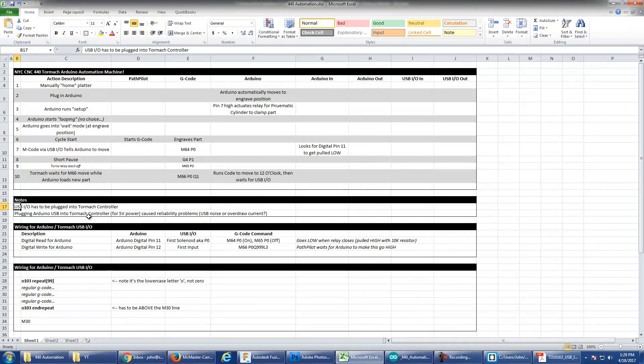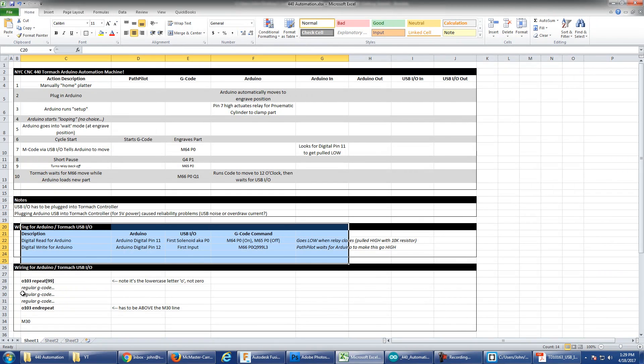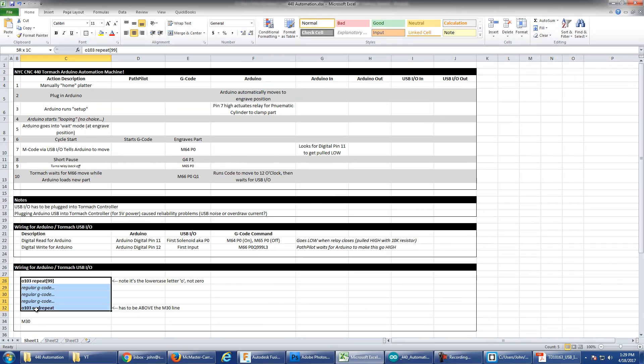A couple other notes. Obviously the USB IO device has to be plugged into your PathPilot USB. I had problems when I was plugging the Arduino into the same computer that was just to provide Arduino power. So I ended up plugging the Arduino into a 12 volt iPhone USB power adapter. I suspect that could have been some current or electrical noise problems there. I've got some additional information on how the Arduino worked as well as on the repeat code or looping code for PathPilot or LinuxCNC.